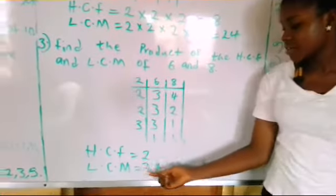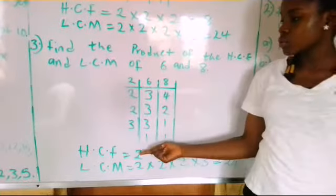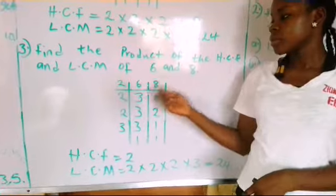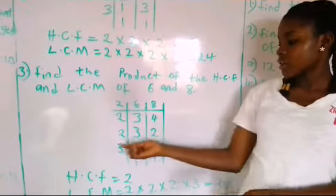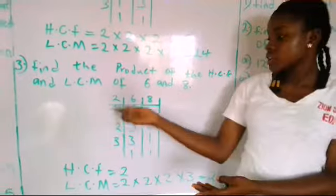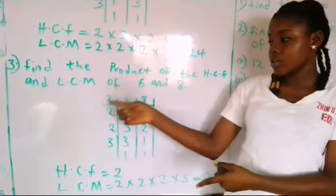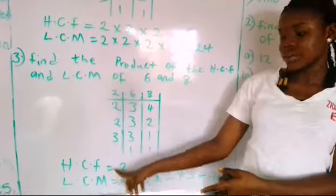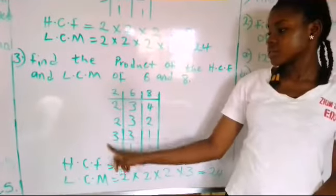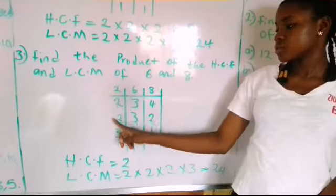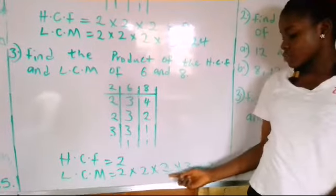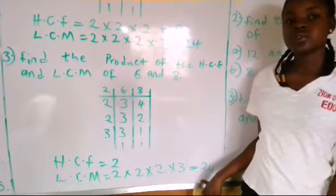Our HCF is 2, because only the first 2 divided both of them. The second 2 divided only 4, the third 2 divided only 2, and the 3 divided only 3. So it is only the first 2 that divided both of them — that is why we have 2 as our HCF. The LCM is the multiplication of all the divisors: 2 times 2 times 2 times 3, which gives us 24.